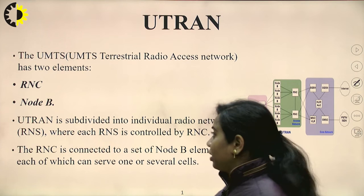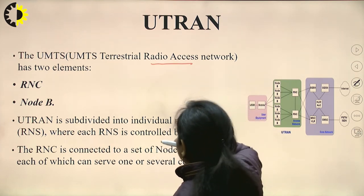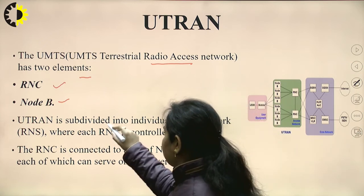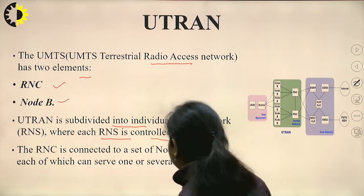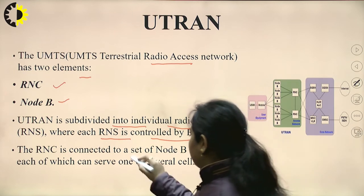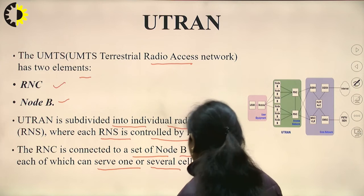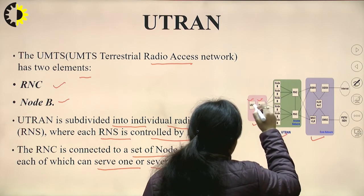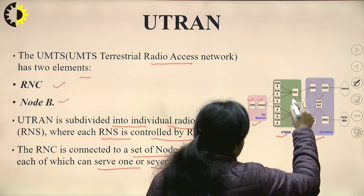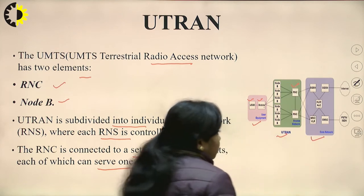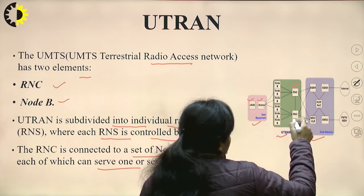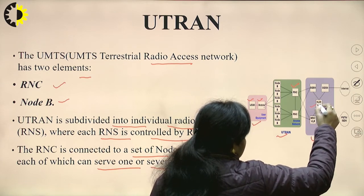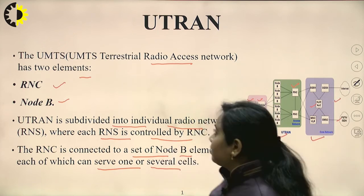UTRAN — the UMTS Terrestrial Radio Access Network — has two elements: RNC (Radio Network Controller) and Node B. UTRAN is subdivided into individual radio networks, each controlled by an RNC. Each RNC is connected to a set of Node B elements, each of which can serve one or several cells. In the UTRAN diagram, user equipment (mobile phone with SIM card) connects through nodes to the radio network controller, and more than one RNC connects to the MSC, HLR (Home Location Register), and ultimately to the internet and PSTN/ISDN.